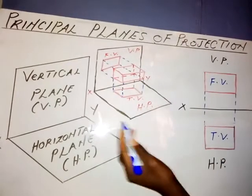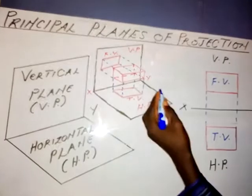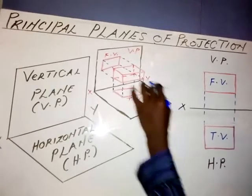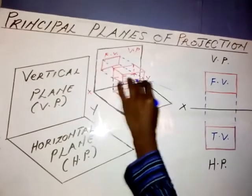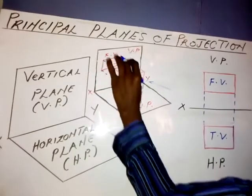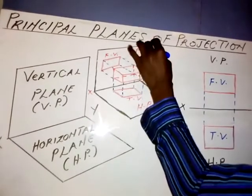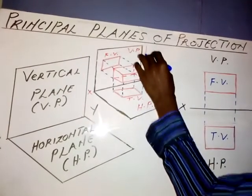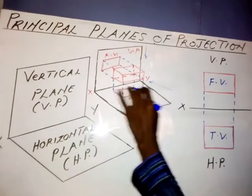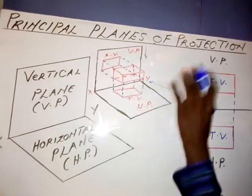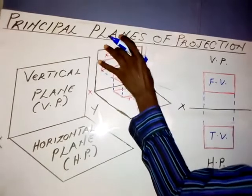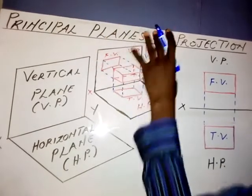When we talk about the front view, it is drawn when the object is being viewed in this direction — so looking at the object in this direction, this is the shape I will get for the front view. Then if I'm looking at it from the top in the direction of this arrow, I will see this shape on the top, and that is what I will get in the plan.